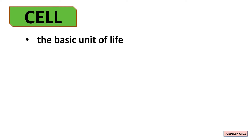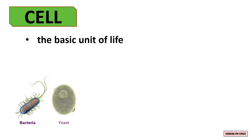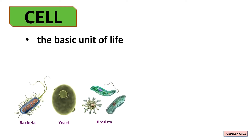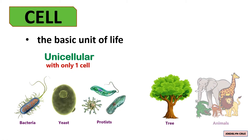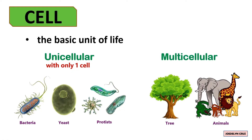Some organisms like bacteria, yeast, and protists are unicellular, which consist of only one cell, while organisms like trees and animals are multicellular, which are made up of many cells.